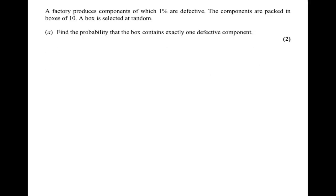We're told that a factory produces components, 1% of which are defective, and that the components are packed in boxes of 10. Part A asks us to find the probability that the box contains exactly one defective component. X will have the binomial distribution because it's the number of successes in a sequence of trials, the trials here being the components, and success being that a component is faulty.